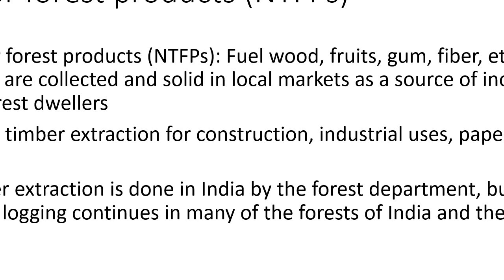Minor forest products include fuel wood, fruit, gum, and fiber, which are collected and sold in local markets as a source of income for forest dwellers. Major timber is needed for furniture and industrial use. For paper production, lignin found in the plant bark is used. Timber extraction is done in India by the forest department, but illegal logging continues in many forests of India and the world.